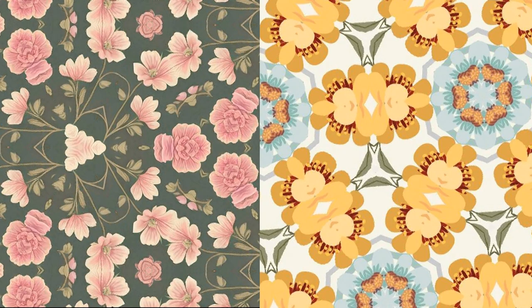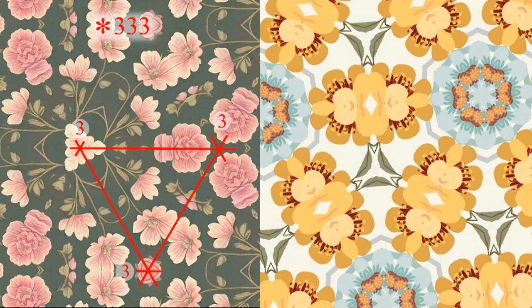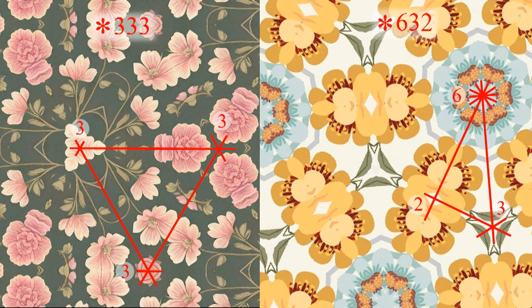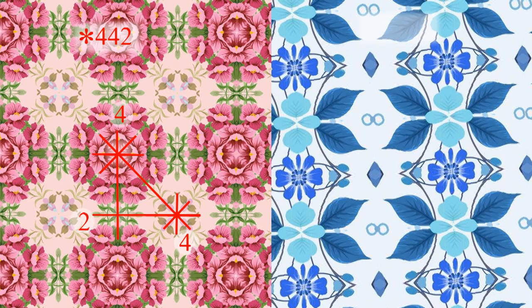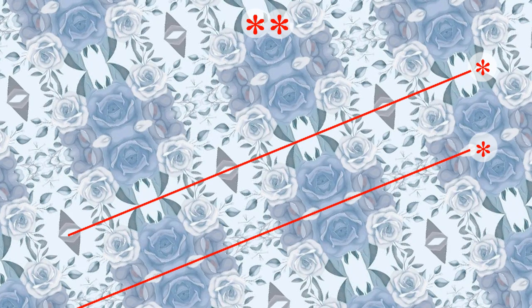If we look at just reflections, we get: star-three-three-three-three, star-six-three-two, star-four-four-two, star-two-two-two-two-two. We can also have two different reflections — that means star-star.